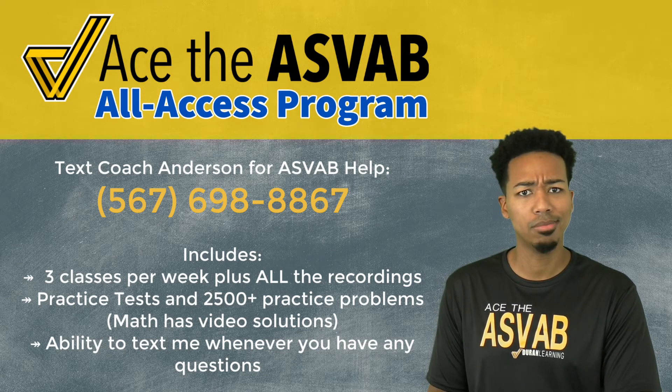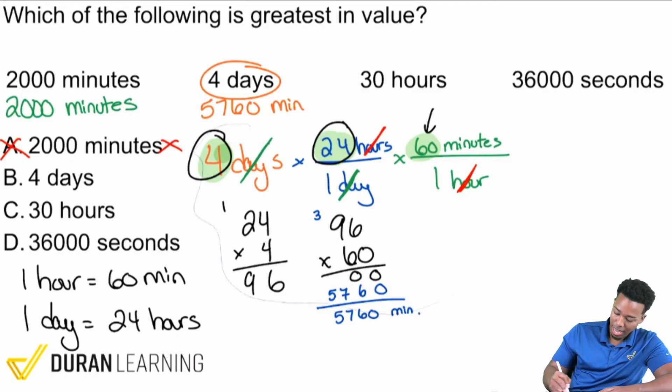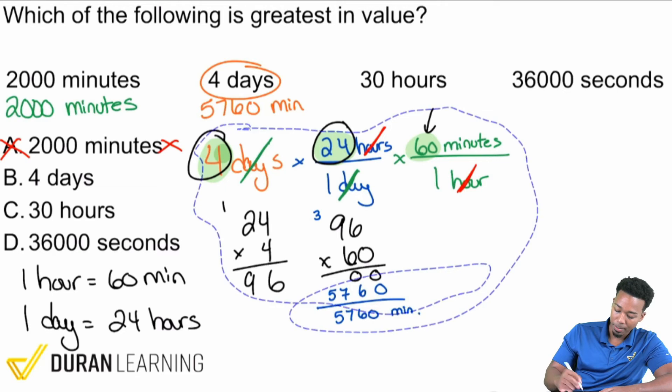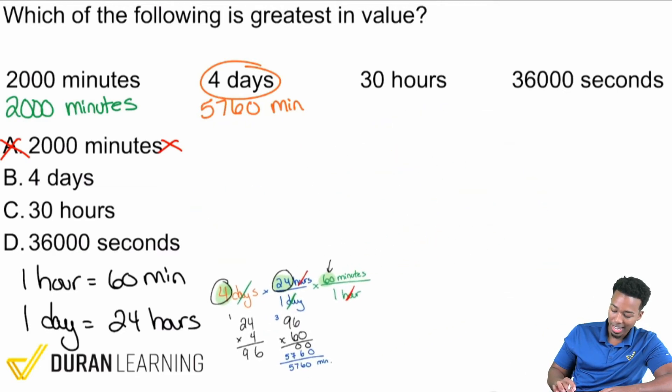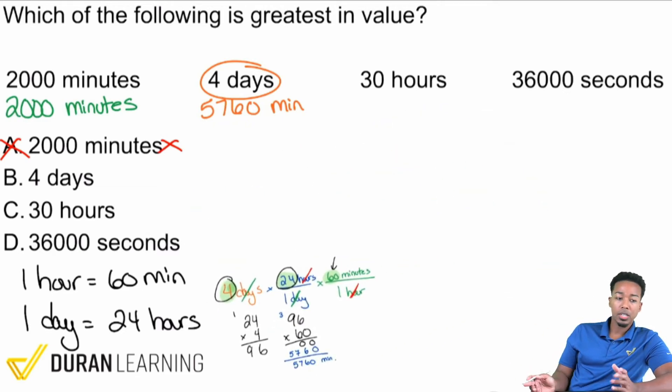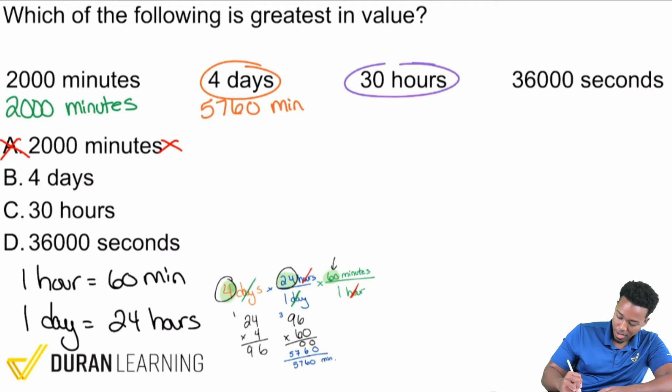We can go ahead and eliminate A as we proceed, that way if we run out of time we can still take a valid guess and still move forward. So 30 hours - now how do we turn 30 hours into minutes? To go from 30 hours to minutes, what we'll do is multiply by 60 minutes divided by one hour. That's the conversion rate that we need to use.